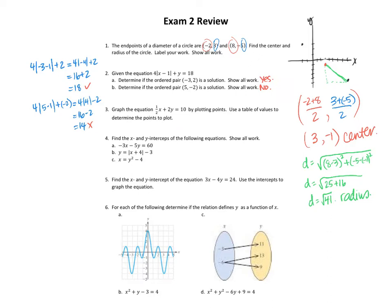Graph the equation one half x plus 2y equals 10 by plotting points, using a table of values to determine the points to plot. So to do this one, what I'm going to do is first put it in slope-intercept form. So I have 2y equals negative one half x plus 10, and then I'm going to divide everything through by 2. So y equals negative one fourth x plus 5. I know my y-intercept is 5 and my slope is negative one fourth. So I can plot the point (0, 5), and then since the slope is negative one fourth, that means down 1 and to the right 4.